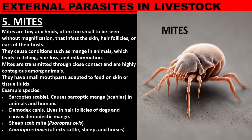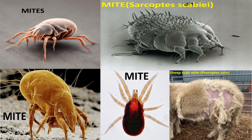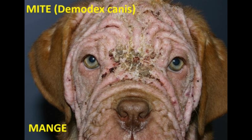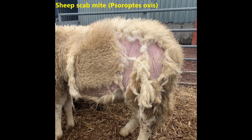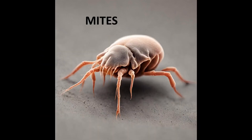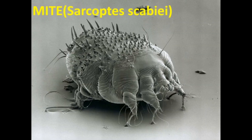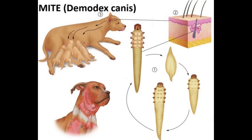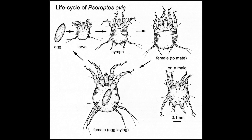Mites are tiny arachnids, often too small to be seen without magnification, that infest the skin, hair follicles, or ears of their hosts. They cause conditions such as mange in animals, which leads to itching, hair loss, and inflammation. Mites are transmitted through close contact and are highly contagious among animals. They have small mouthparts adapted to feed on skin or tissue fluids. Examples of species include mites affecting humans, dog mites, and sheep scab mites.